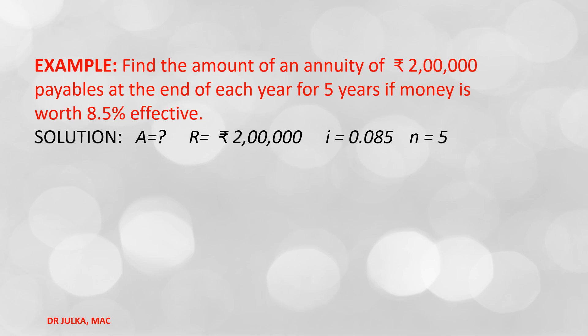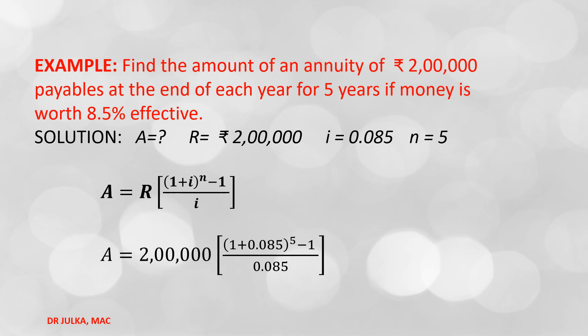We want to calculate the future value A. In ordinary annuity, future value = R × [(1 + i)^n − 1] / i. Putting R = 2 lakh, i = 0.085, and n = 5, after calculation we get A = Rs. 11,85,074 and 57 paisa.